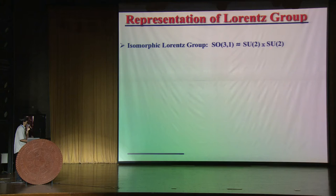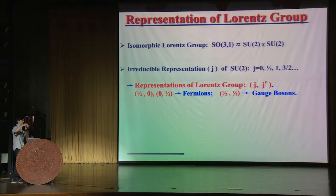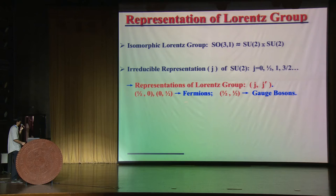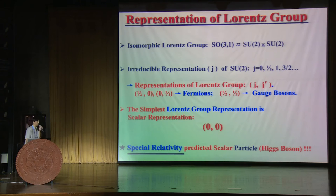It is useful to recall the representations of the Lorentz group. We know it is isomorphic to SU(2)×SU(2), so representations are characterized by two half-integer quantum numbers J and J̄. The different values of J and J̄ give us a periodic table. Quarks and leptons — spin-1/2 fermions — fall into the spinor representation. The gauge bosons fall into the vector representation (1/2, 1/2). The simplest Lorentz group representation is the scalar representation, (0, 0).